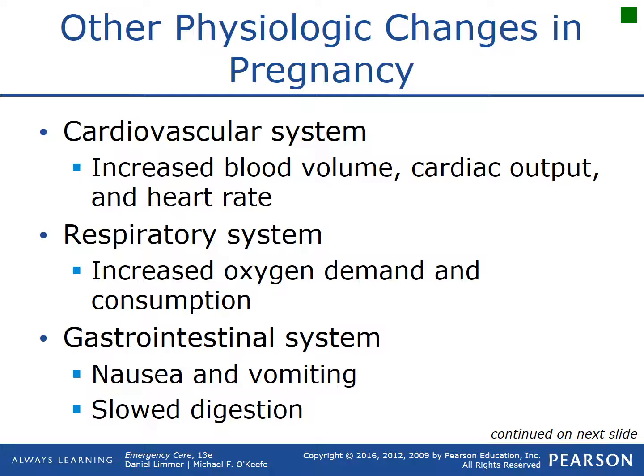With the respiratory system, there's an increase in oxygen demand and consumption because the pregnant female is breathing to provide oxygenation for four lungs — two bodies. The GI system experiences slow digestion, causing acid reflux, nausea, and vomiting. Generally, most of those symptoms subside after the first trimester.